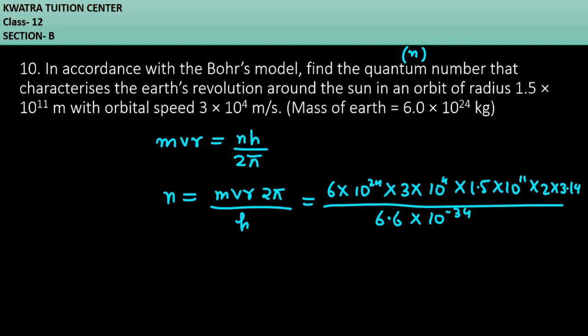Just reduce the expression so that you can get the value of the quantum number. We can reduce the powers of 10 easily: 10^24 multiplied by 10^4 multiplied by 10^11. So 24 plus 4 is 28, and 28 plus 11 gives you 39.